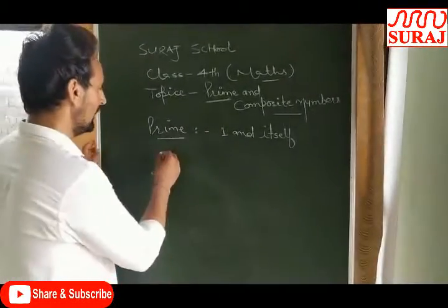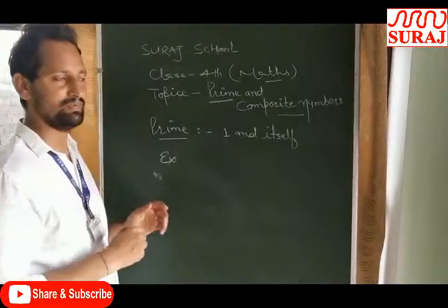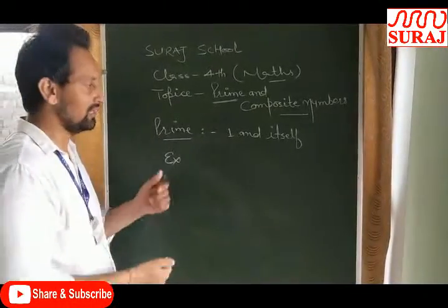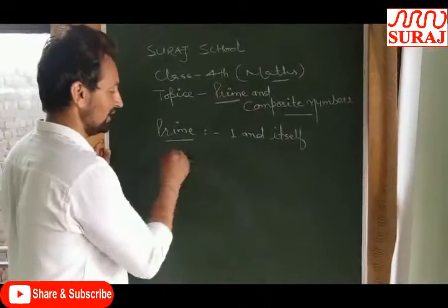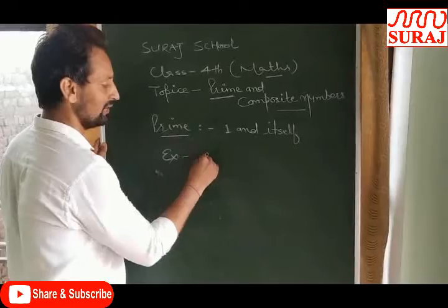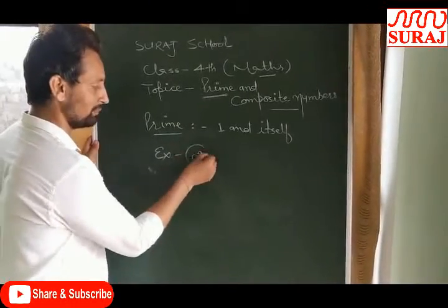For example, if we have some numbers, we need to know whether a number is prime or composite. First of all, we have two. Two is a prime number.